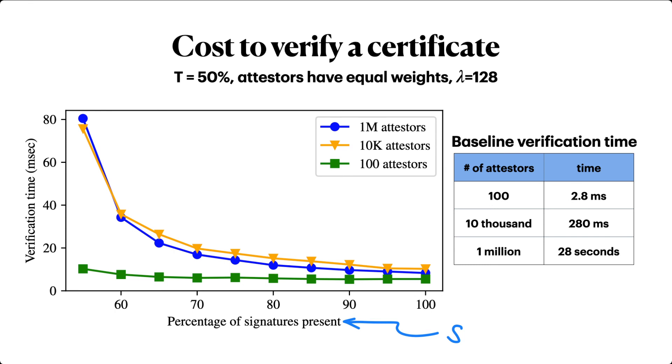Interestingly, the verification times for 10,000 and for 1 million attesters are essentially the same. The main difference is in the cost to verify Merkle paths, and that's low order. Concretely, verification time ranges from slightly under 10 milliseconds to just about 80 milliseconds across this parameter range.